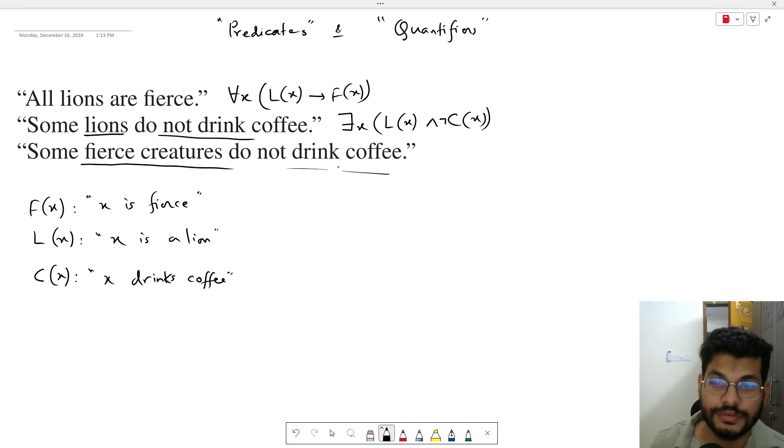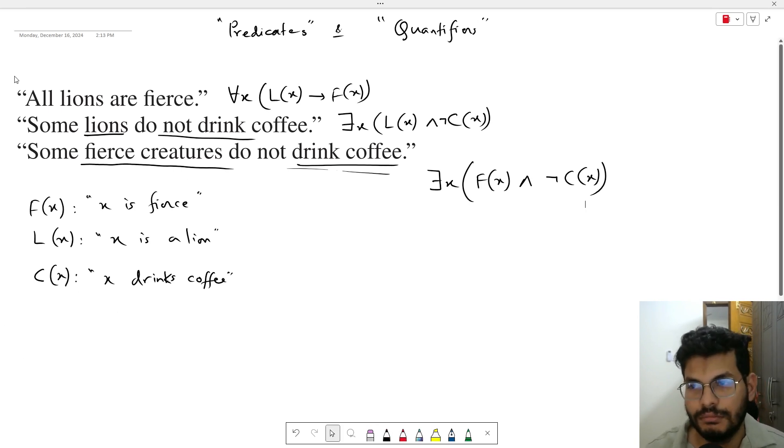Some fierce creatures do not drink coffee. Our domain changes - X is fierce. There exists some X such that X is a fierce creature and does not drink coffee. Okay, so this is an example.